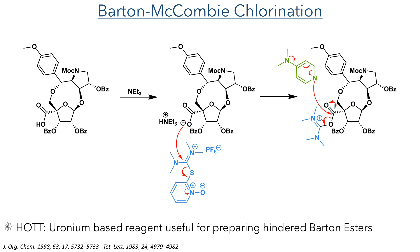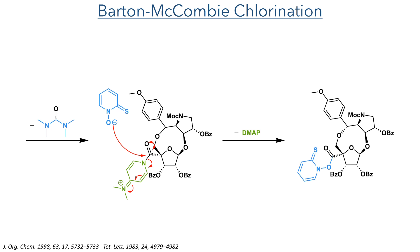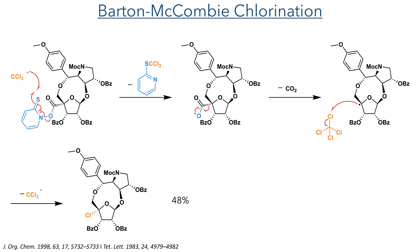This acid was required for a Barton decarboxylative chlorination. It is firstly deprotonated by triethylamine and then attacks HOTT. This reagent contains a uronium moiety and can react in a similar manner to uronium-based peptide coupling reagents. It is particularly effective at preparing sterically hindered Barton esters. After attacking the HOTT reagent, the activated ester is then attacked by DMAP, eliminating a urea byproduct and forming a more active ester. This ester can be attacked by N-hydroxythiopyridone, forming the Barton ester. No radical initiator was used for this reaction, so it is likely initiated by trace amounts of carbon trichloride radical present in the carbon tetrachloride solvent. This reacts with the thiopyridone, triggering the homolysis of the oxygen-nitrogen bond. This forms a carboxylate radical that then eliminates as carbon dioxide, leaving a radical now residing on the C4 position of the ribose ring. This abstracts a chlorine radical from the carbon tetrachloride solvent, installing the chloride in a 48% yield, along with the regeneration of the carbon trichloride radical.